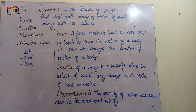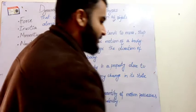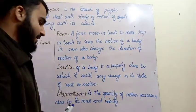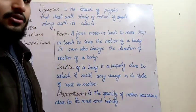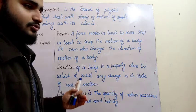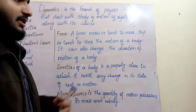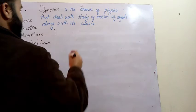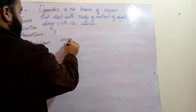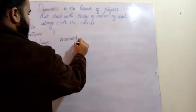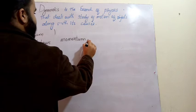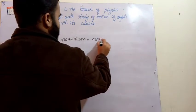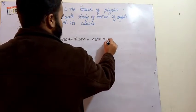Let us discuss the mathematical definition and formula of momentum. The formula of momentum: momentum is equal to the product of mass and velocity. That means we multiply mass by velocity. We represent momentum with the symbol p.